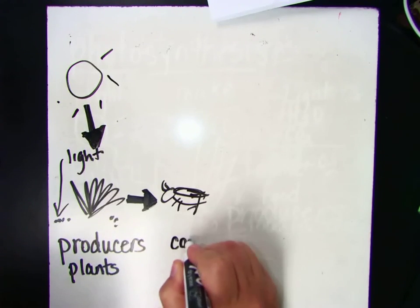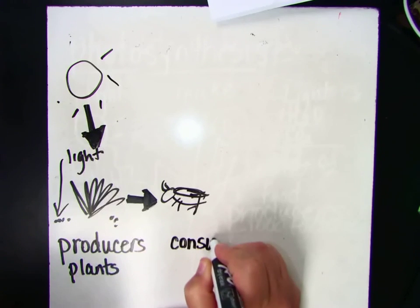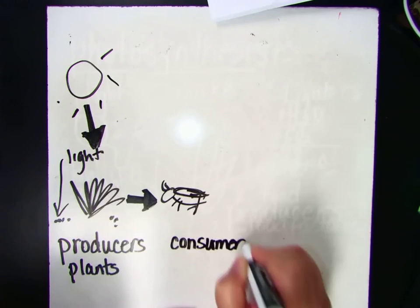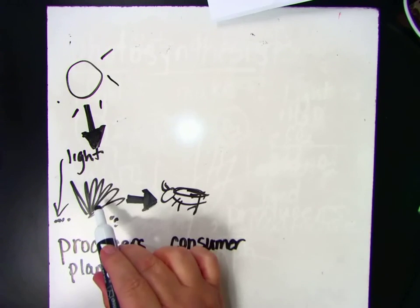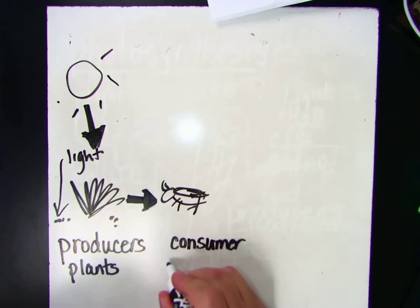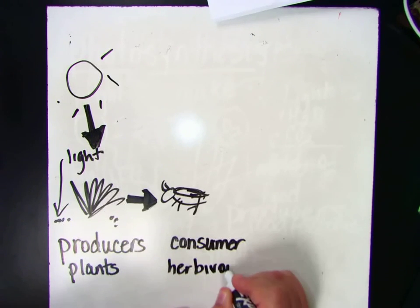And so the cricket is called a consumer. We're consumers because we consume things. And because a cricket eats plant matter, he is also called a herbivore. A herbivore is something that eats plants.